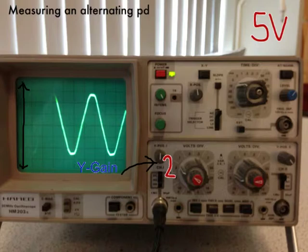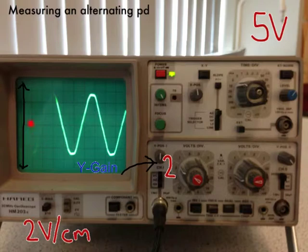And what that actually means is that I have set the oscilloscope to measure 2 volts per centimetre. So, each one of these little squares here is a centimetre. Each one of those squares, I've set it as 2 volts per centimetre. Each little square is worth 2 volts.